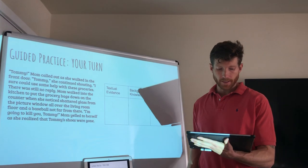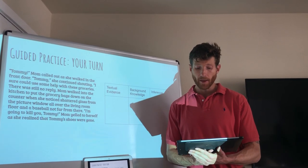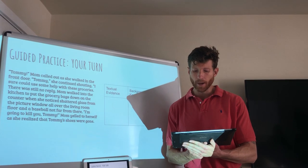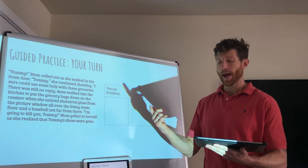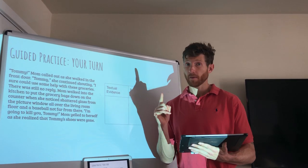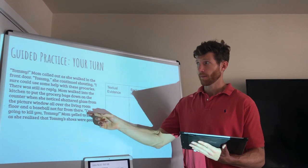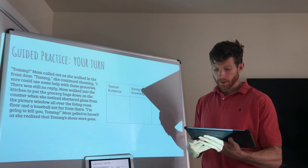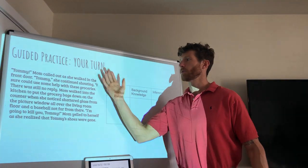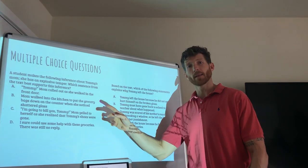Okay, your turn — guided practice. When we make an inference, we add textual evidence to background knowledge. After adding evidence to what you already know about life, we are ready to make an inference. Remember, when you make an inference, think about what happened but also ask yourself how you would feel if that happened to you. First, read the text twice, then annotate — highlight words or phrases that stand out, not entire sentences. Focus on repeated words throughout the passage. Then fill in the graphic organizer and answer the two multiple choice questions that follow.